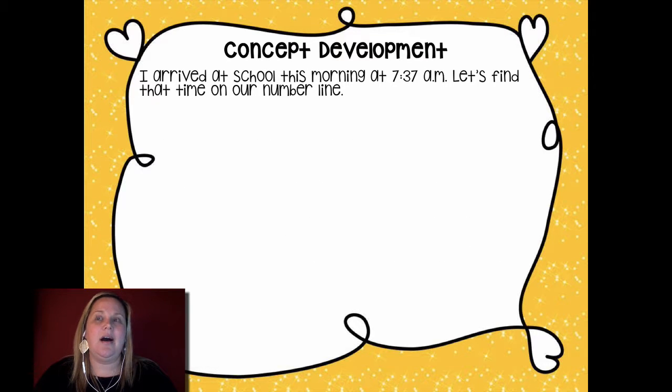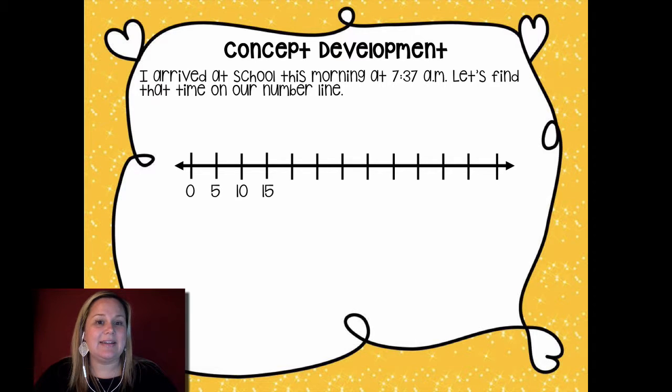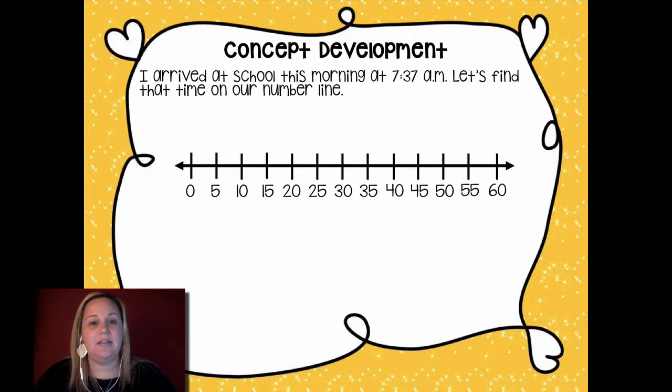So I arrived at school this morning at 7:37 AM. Let's find that time on our number line. So we're going to use the very same strategy that we just did to draw our number line. What I would suggest you guys do now is take out a blank piece of paper and draw your number line on the piece of paper. Like we just did with the ruler all the way to 12 centimeters. And then every centimeter is its own five minute interval. So here's your 12 centimeter line, go all the way through 12 centimeters. Then go back and label each one just like that.